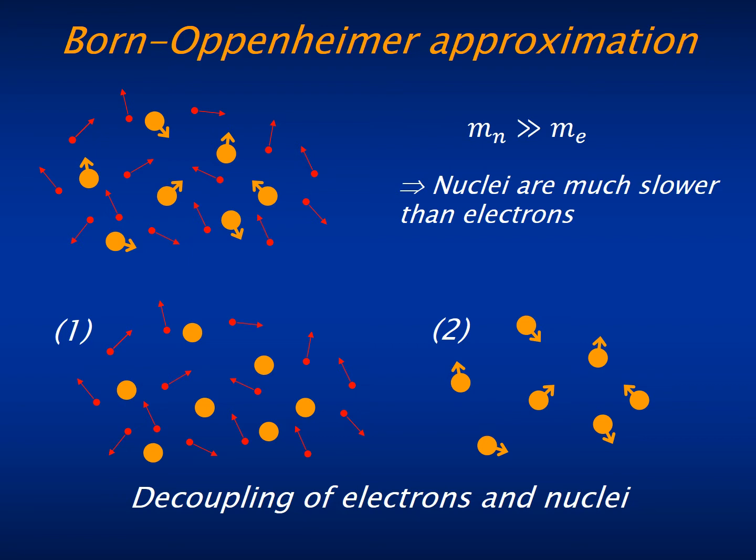So what we can do is, at each particular time, consider the nuclei at fixed positions and then solve Schrödinger's equation for the electrons.